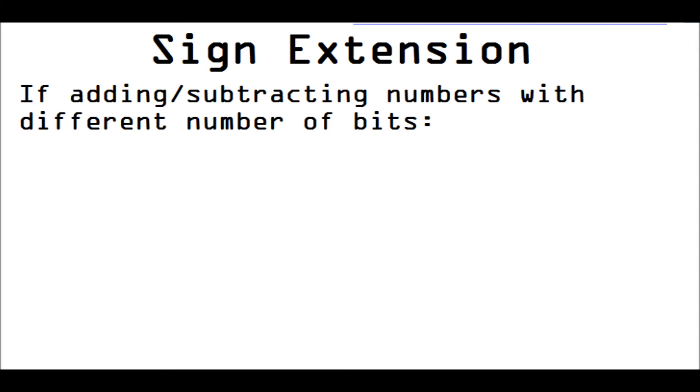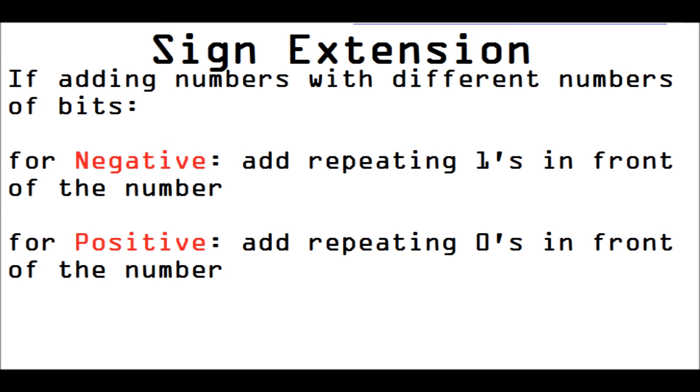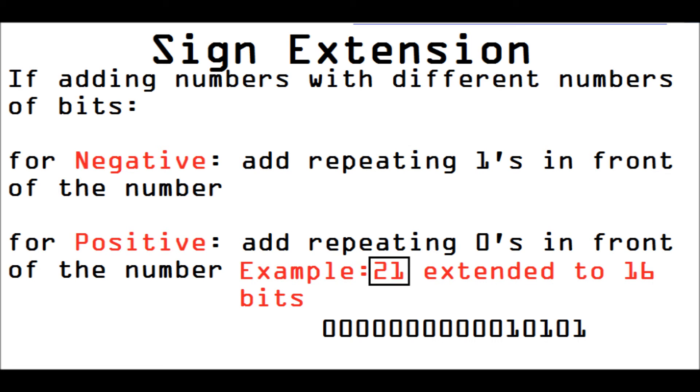If the numbers that we're adding or subtracting have a different number of bits, we basically have to sign-extend it, meaning that we stack a bunch of ones or zeros, depending on whether it's positive or negative, in front of the number. So, an example would be 21 extended to 16 bits. We'll just have a bunch of zeros in front of it.